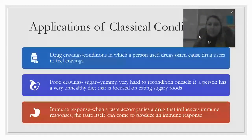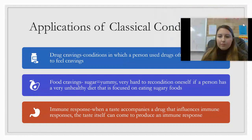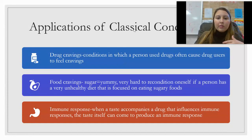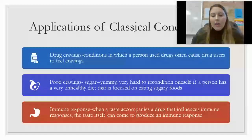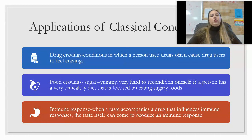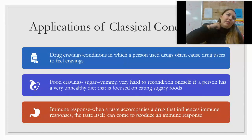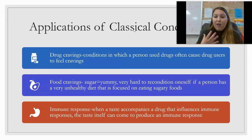Here are some applications of classical conditioning. One example is drug cravings. When a person uses addictive drugs and goes through withdrawal, they crave the conditioned response — the feeling produced when the drug enters the system. That craving is a conditioned response triggered by associated stimuli.